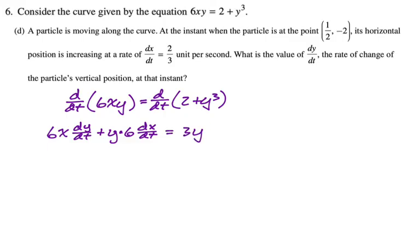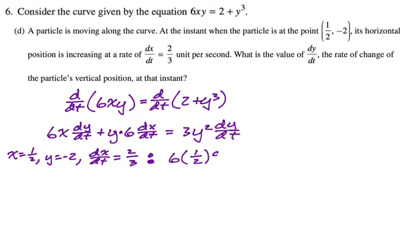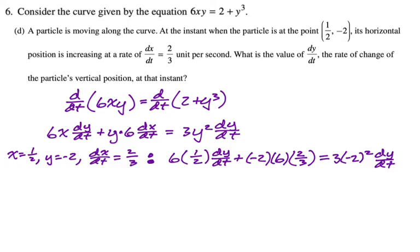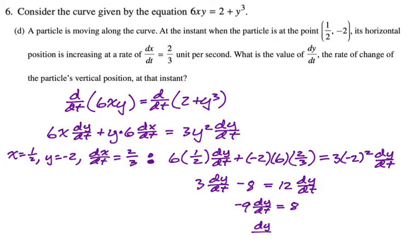We're given that x equals 1/2, y equals negative 2, and dx/dt equals 2/3. Substituting in: 6 times (1/2) times dy/dt plus (negative 2) times 6 times (2/3) equals 3 times (negative 2 squared) times dy/dt. This simplifies to 3 dy/dt minus 8 equals 12 dy/dt. Bringing the 12 dy/dt to the left gives negative 9 dy/dt equals 8, so dy/dt equals negative 8/9.